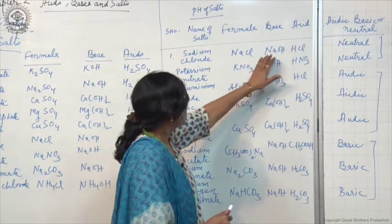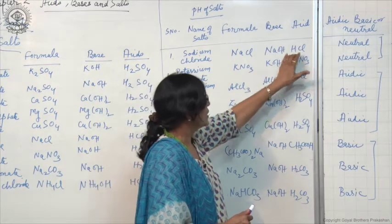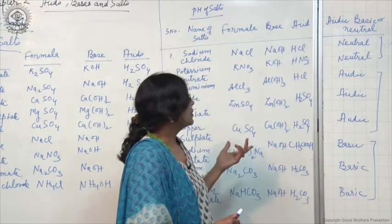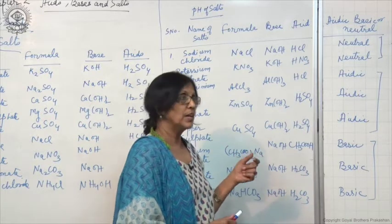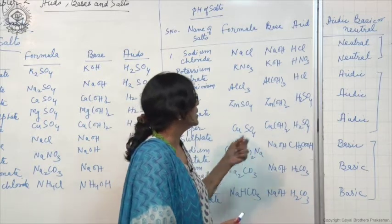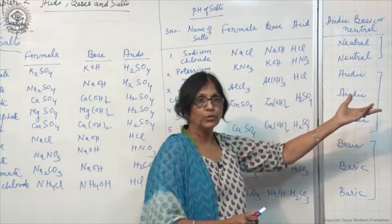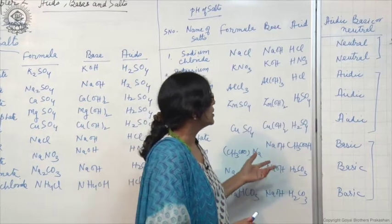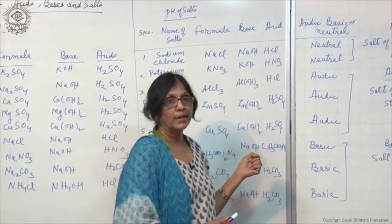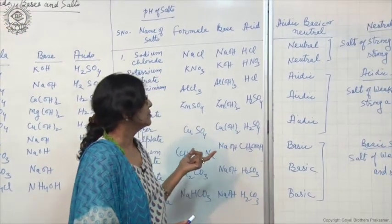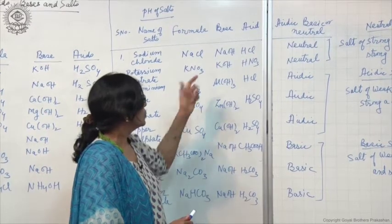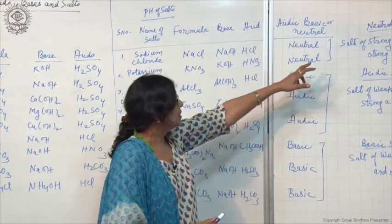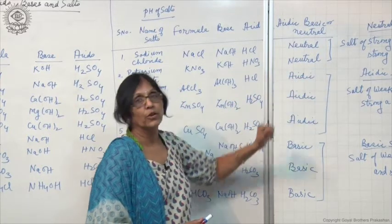NaOH is a strong base and HCl is also a strong acid. When tested with blue litmus paper or red litmus paper, you will find that NaCl is neutral — it neither changes the colour of blue litmus paper nor red litmus paper. It is neutral and the pH is 7. So, it is a neutral salt — the salt of a strong acid and a strong base.